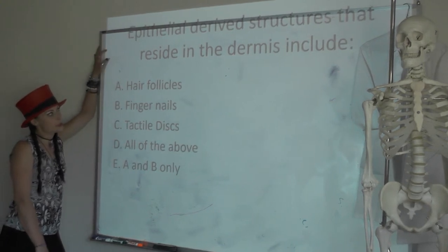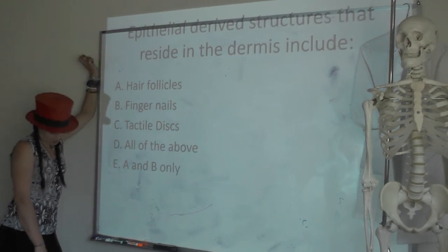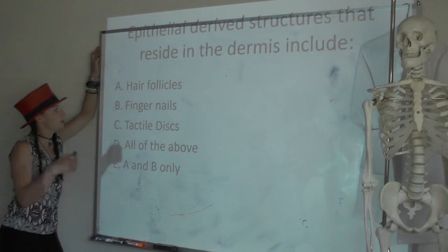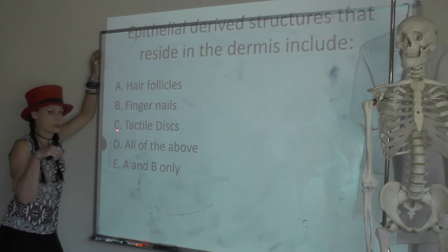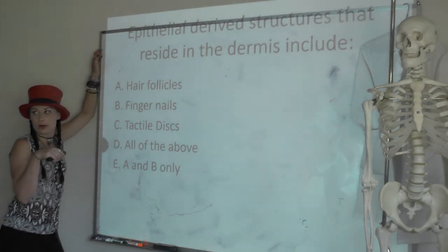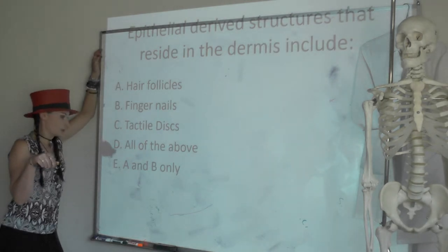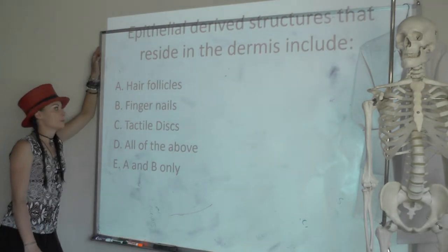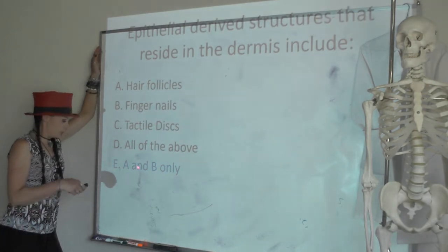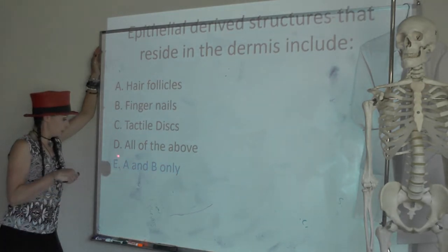Quick question: epithelial-derived structures that reside in the dermis include A, hair follicles; B, fingernails; C, tactile discs; D, all of the above; E, A and B only. The answer is A and B only.